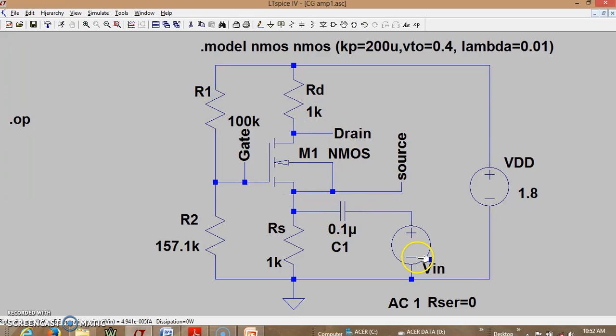So the Vin is applied. We are applying an AC source and let us assume that initially the series resistance, the source resistance of this source, let it be 0. So let us first do the .op. We have also considered the model parameters of the MOSFET as Kp, Vto, and lambda as are given over here.